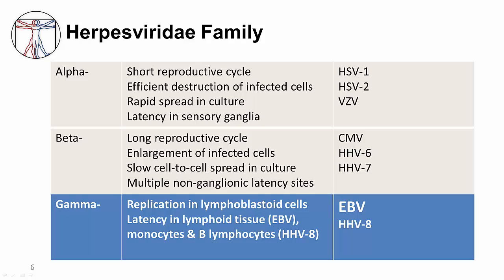Beta herpes viruses include cytomegalovirus and human herpes viruses 6 and 7. These viruses tend to reproduce less quickly than other herpes viruses, with slow cell-to-cell spread in culture. The beta herpes viruses establish latency in many non-ganglionic sites, particularly leukocytes.